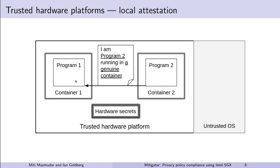After Program 1 verifies Program 2's report, it may have its own authentication policy. These authentication policies influence the trusted computing base of the system. For example, only allowing peer enclaves with certain signer measurements requires peer enclaves to be signed by some trusted party. If a client wishes to verify that a certain program is run within an SGX container on a remote machine, it runs a variation of this process, known as remote attestation, which may involve communication with a trusted hardware platform manufacturer — Intel in this case.